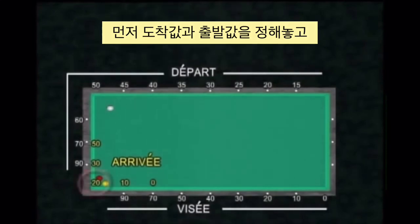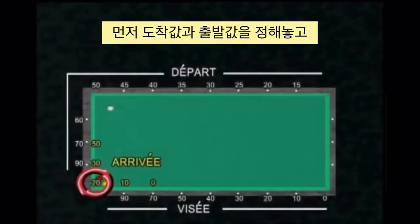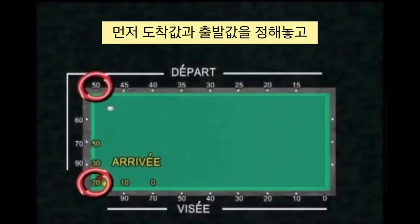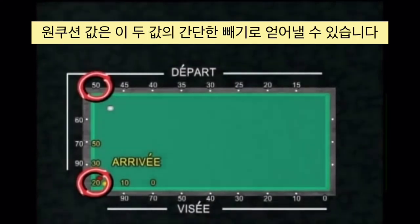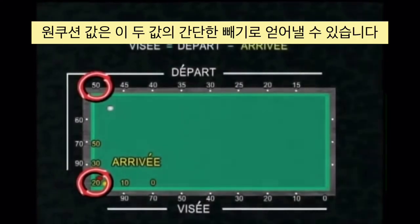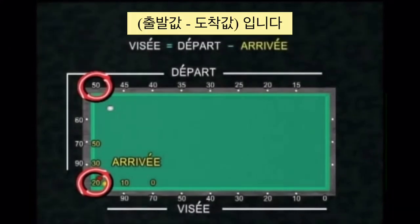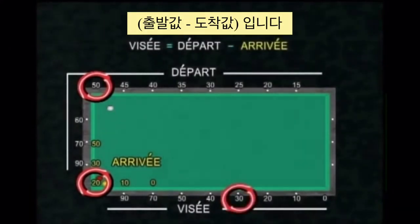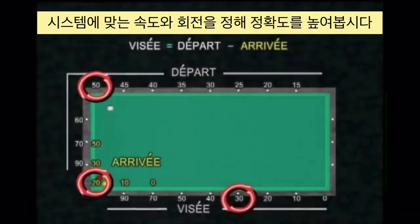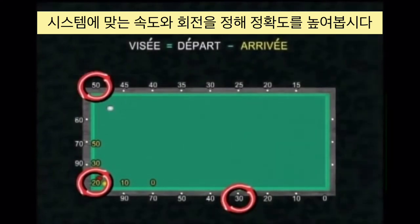The players need to identify the arrival value plus the departure value according to the position of the balls. The calculation of the target point is obtained by a simple subtraction: departure value minus arrival value. The regularity of the movement and the right dosing of English will give the player improved precision.